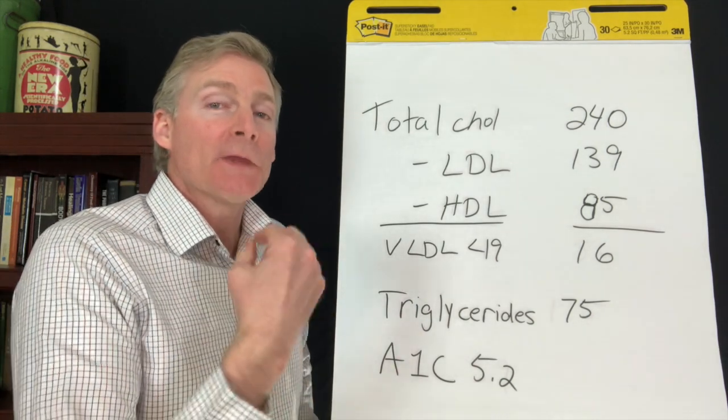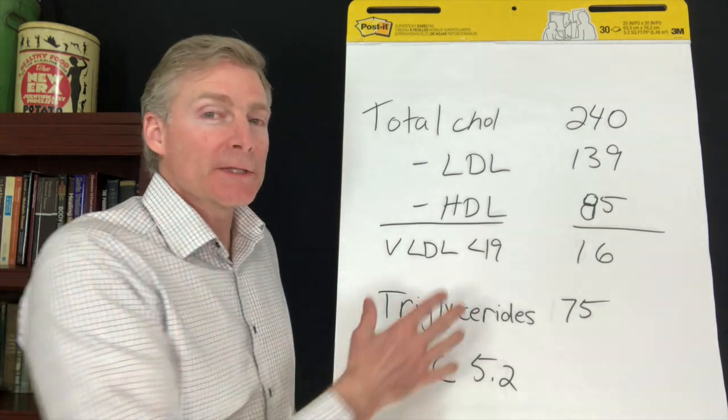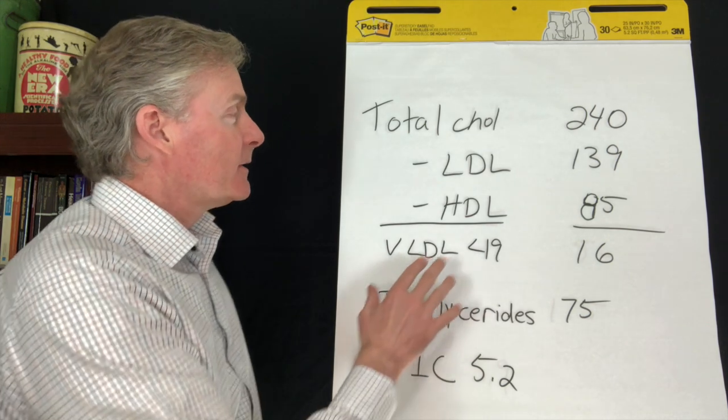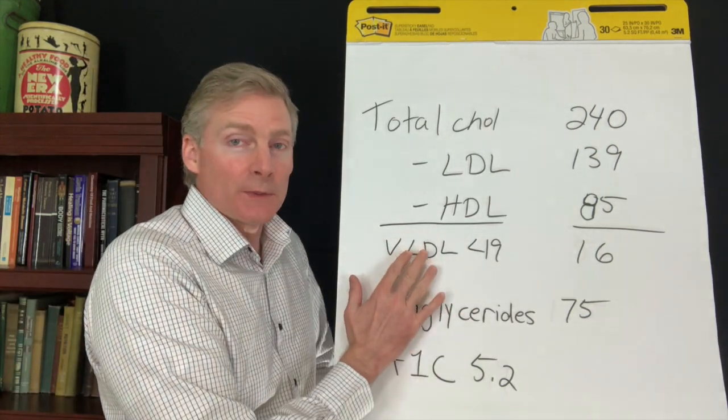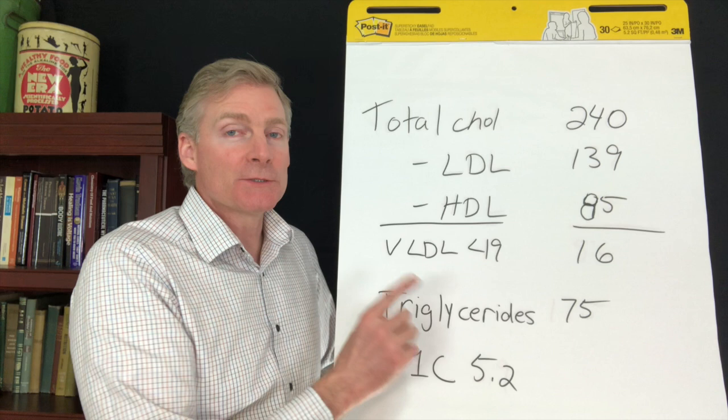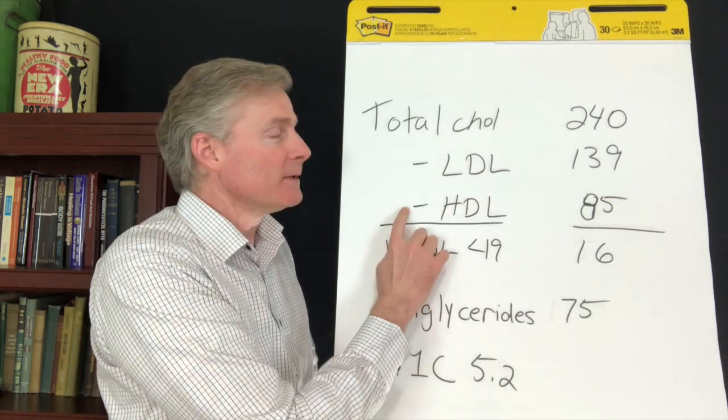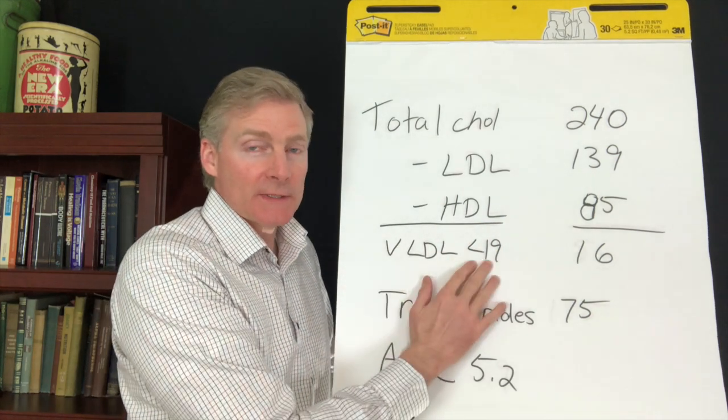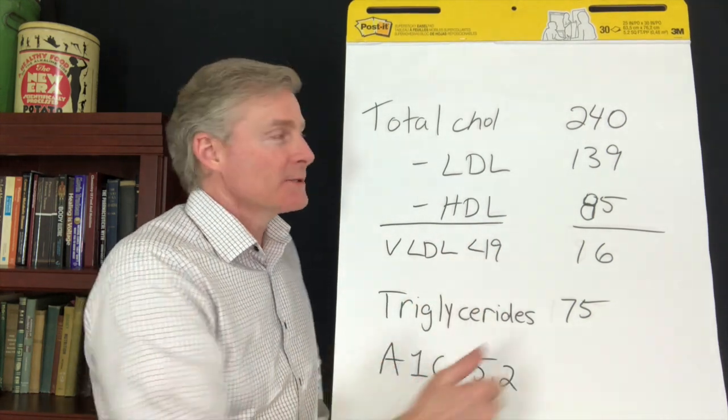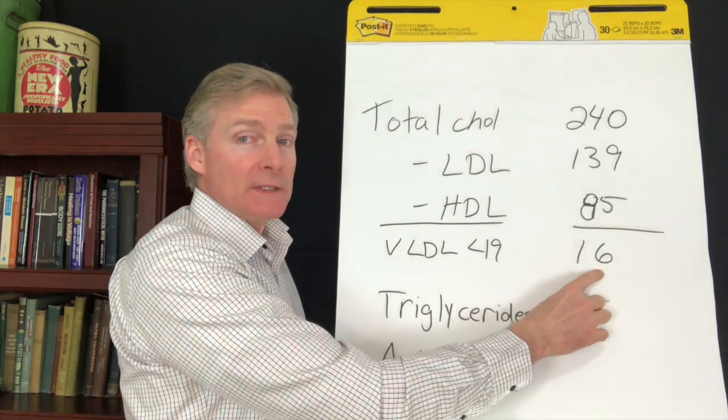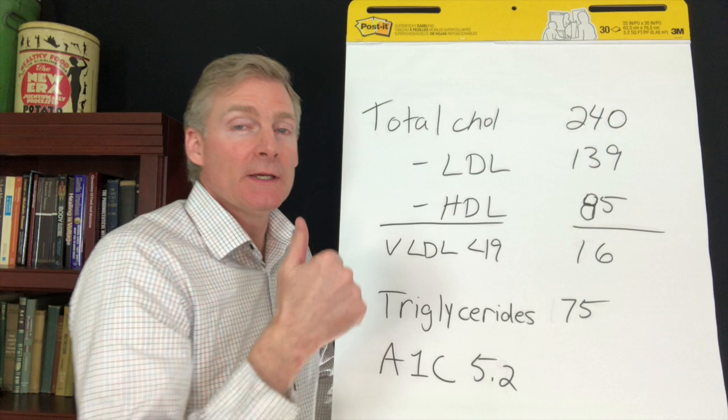They have to. If they don't, and then you have a heart attack, they're the ones in trouble. But let's look at the rest of the numbers and figure this out. So if you have no VLDL reporting on your lab, then you just do this math to figure it out. Total cholesterol minus LDL minus HDL. And as long as that's less than 19, you're okay. So in this example, 240 minus 139 minus 85 equals 16. This is less than 19. It's okay.